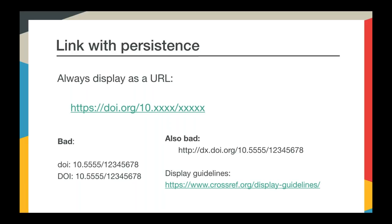This is a new recommendation. You may see DOIs represented differently until everyone moves over to our new guidelines. In the past we recommended the prefix dx.doi.org, but the DX isn't really necessary, so we've done away with that to shorten the URL. We do recommend that DOI links be https now. In the very distant past, DOIs were represented as 'DOI:' but we've moved away from that. It's vital that everyone who sees a DOI knows it's a link and can use it as one. There's a link to the full DOI display guidelines on this slide.